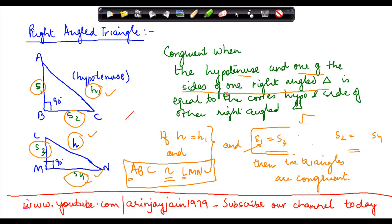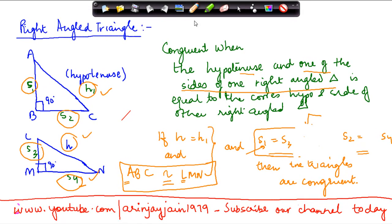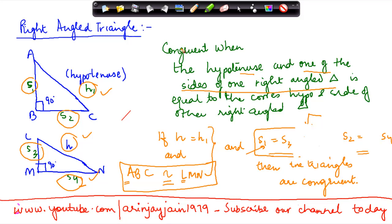Generally it says one of the sides has to be equal to the other sides, but specifically it has to be in correspondence. Then the two triangles are said to be congruent.